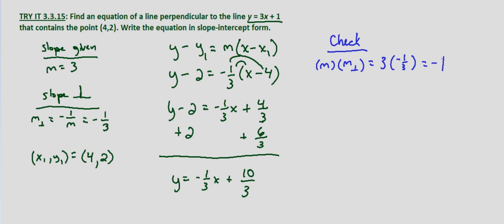And now we can substitute in our given point for 2. So does 2 equal negative 1 third times our given x is 4 plus 10 thirds? Negative 1 third times 4 is negative 4 thirds plus 10 thirds. So this is 6 thirds.